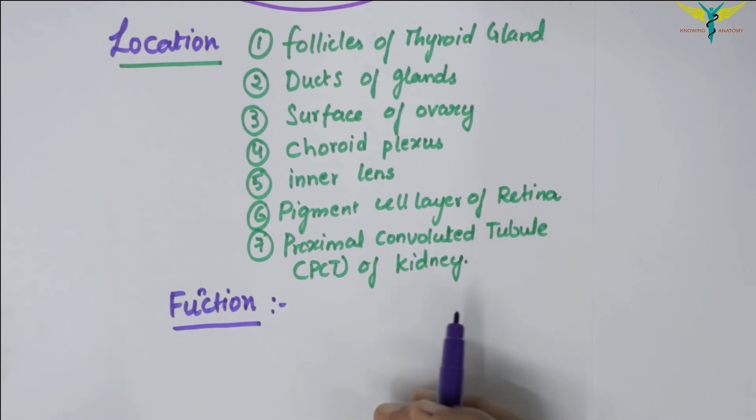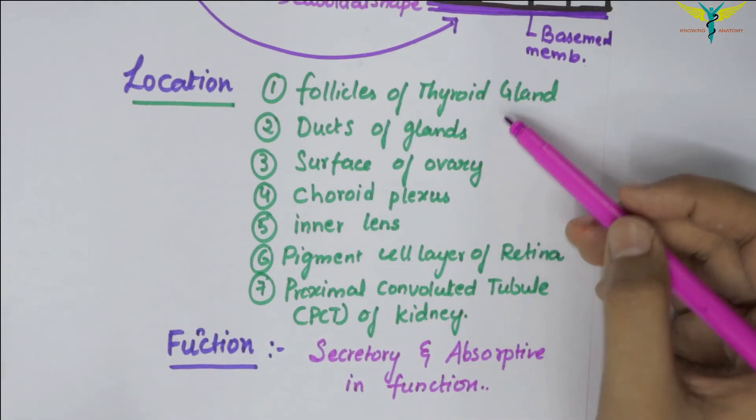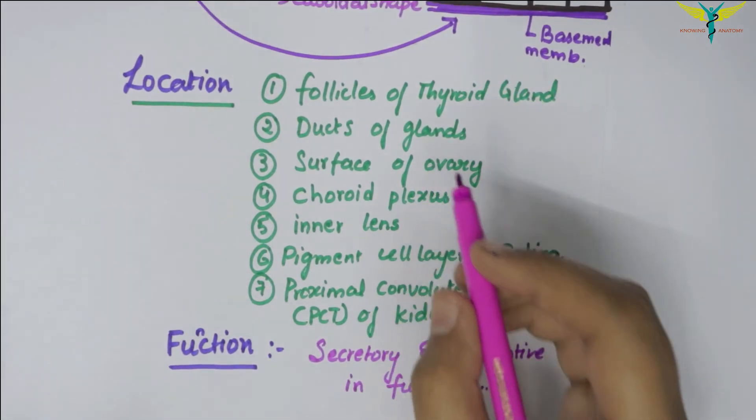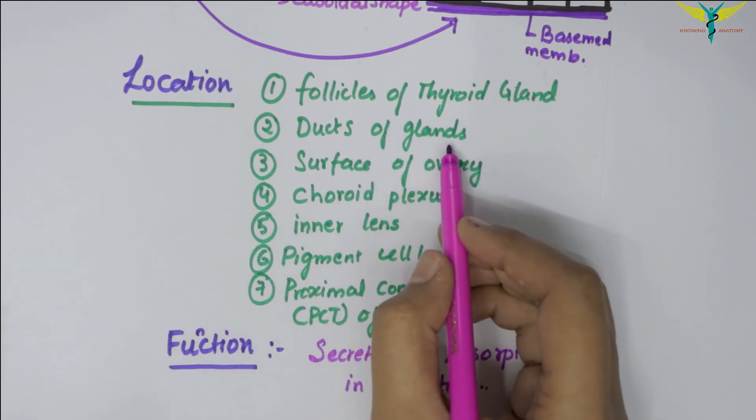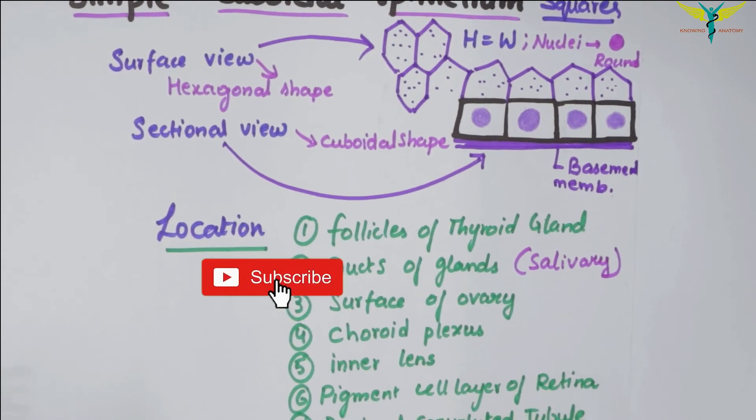The function of the cuboidal epithelium is mainly concerned with secretory and absorptive functions, as it is mainly present in the ducts and follicles. It is present in the ducts of the salivary gland. So this is all about the simple cuboidal epithelium.